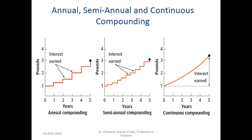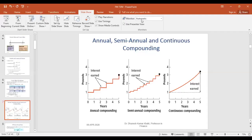If we compare annual, semi-annual, quarterly, monthly, and daily/continuous compounding on a graph, the interest earned increases with compounding frequency. With continuous compounding, the curve rises steeply compared to annual compounding.